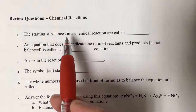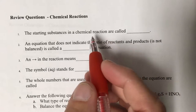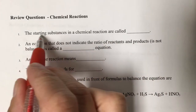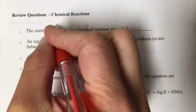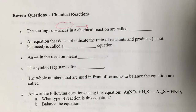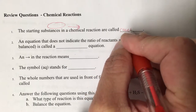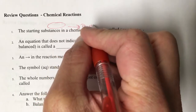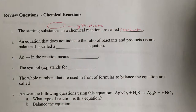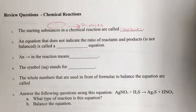The first question is about understanding what side of the equation is what — being able to work with the terminology. We're talking about the starting substances on the left side of our arrow. Those are our reactants. The products are on the right side. So you start with reactants, you end with products.